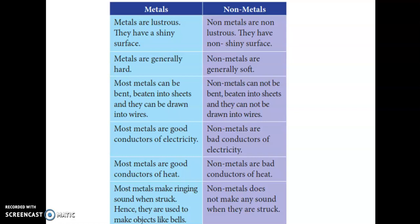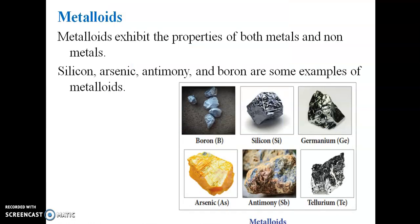Key differences: metals are shiny while non-metals are not; metals are hard while non-metals are soft; metals are good conductors of electricity while non-metals are bad conductors. Metalloids exhibit properties of both metals and non-metals. Silicon, arsenic, antimony, and boron are examples of metalloids.